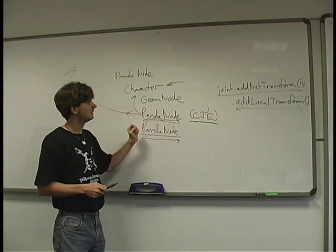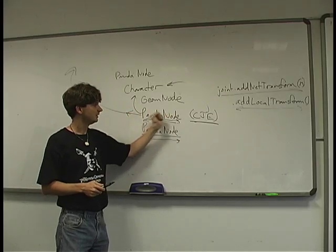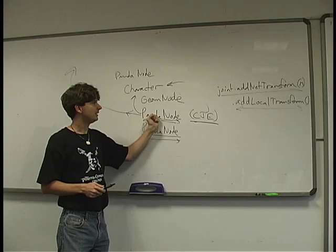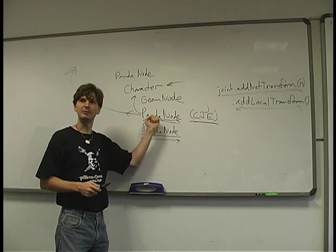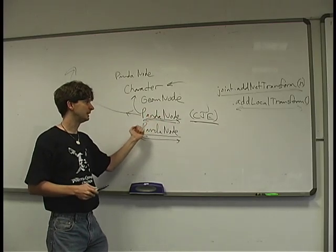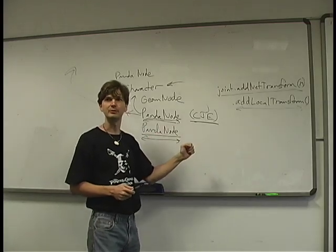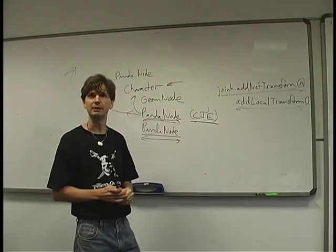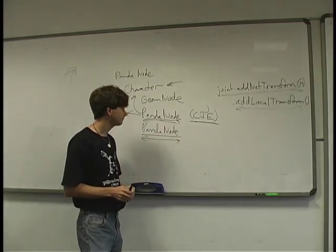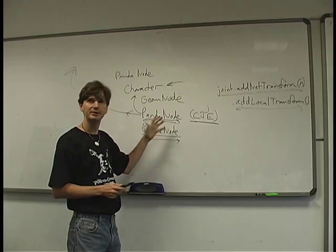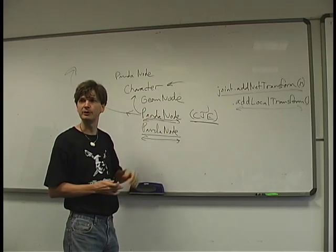In summary: when we call exposeJoint(), we create a PandaNode and write the joint's transform to it every frame. When we call controlJoint(), we create a PandaNode and read the transform from it every frame to drive the joint. There are different times each is appropriate.